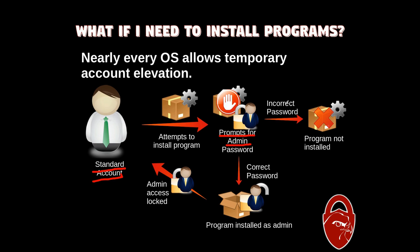If the user can't supply the correct password, then the program's not installed. However, if the user does provide the password for the admin account, that program is run as the admin temporarily — as illustrated here with the open lock. The program is installed as an admin, it gets installed on the system, and then right before it goes back to the standard user, that access is locked. So it allows you to install software while using a standard account as if you were running as the admin.